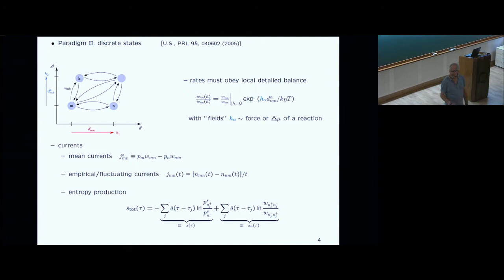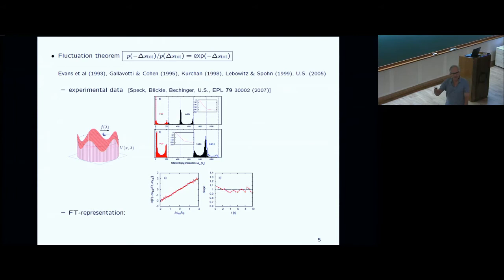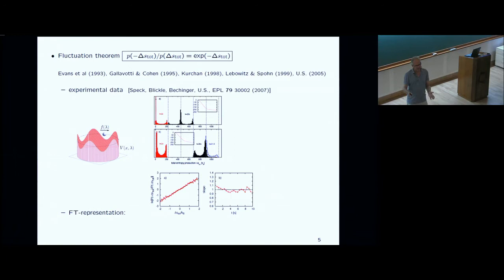You get mean currents between any pair of states. For non-equilibrium steady states, there is a mathematical theorem — the fluctuation theorem — originally found in numerical studies by Evans and coworkers, then proven for various dynamics by Kochan, Lebowitz, and others. If you include the stochastic entropy boundary terms, this relation, which in the early days was only a long-time relation, will hold in finite times. And it's nice to have something in finite times because experiments take place in finite times.